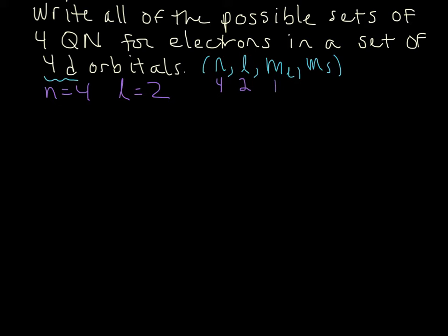So that means we know these two right now. What we need to do is figure out the number of m sub l values and then write a plus one half version and a minus one half version for each one of those. So that's our strategy, that's how we're going to do this. So what are the possible m sub l values?